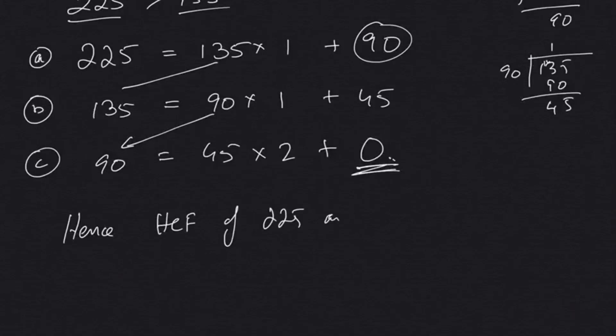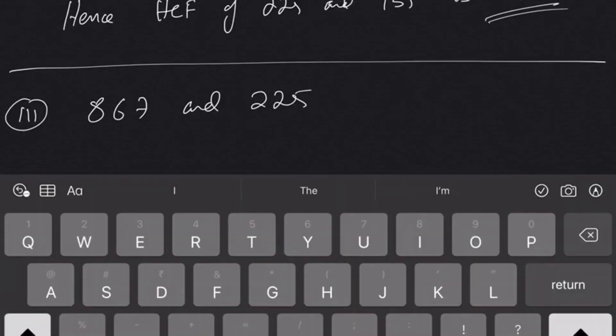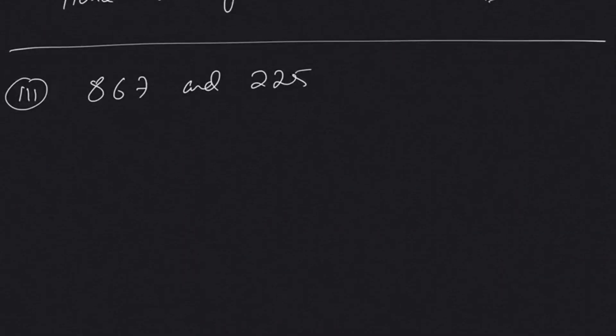Let's continue with one more problem. That's problem number 3, that is HCF of 867 and 225. So since 867 is bigger here, so we'll continue with that. Now first step: 867 will be equal to 225 into how many times plus the remainder. Let's see, 867...